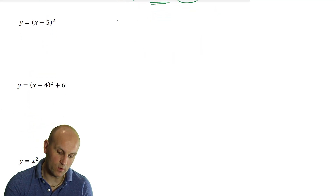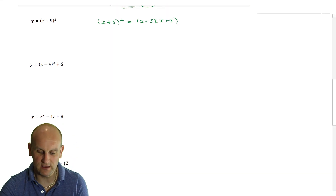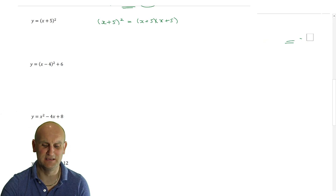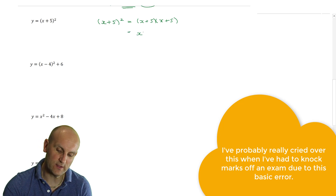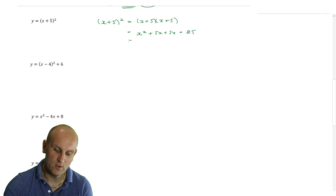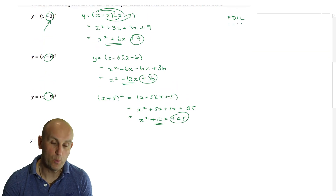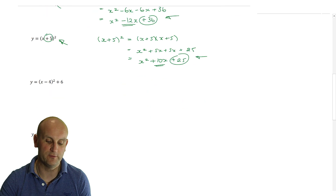One more. y equals x plus 5 squared equals x plus 5 multiplied by x plus 5. It really worries me that some people think that when I do that, I just square the x and square the 5 — please don't do that, it leads to all sorts of mistakes. So once again, I get x squared plus 5x plus 5x plus 25, which gives me x squared plus 10x plus 25. What you're beginning to notice is that this number here, when I square it — plus 3 times plus 3 gives the number on the end, minus 6 times minus 6 gives the number on the end, plus 5 times plus 5 gives the number on the end.